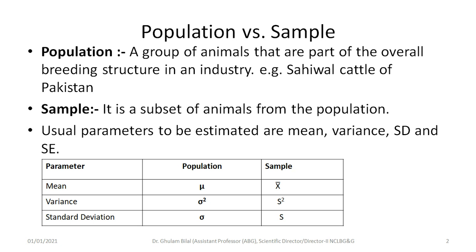Parameters have different notations. In the case of population, mean is mu; in the case of sample, it is X-bar. For variance, in the case of population it is sigma squared; in the case of sample it is S squared. Standard deviation is simply sigma for population and S for sample. We usually follow these notations in our statistical studies.